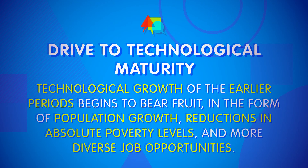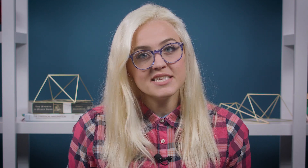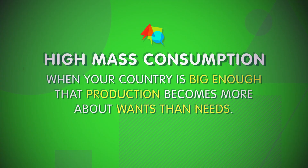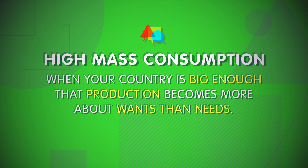Next, nations begin what Rostow called the drive to technological maturity, in which technological growth of the earlier periods begins to bear fruit in the form of population growth, reductions in absolute poverty levels, and more diverse job opportunities. Nations in this phase typically begin to push for social change along with economic change, like implementing basic schooling for everyone and developing more democratic political systems. The last stage is known as high mass consumption, when your country is big enough that production becomes more about wants than needs. Many of these countries put social support systems in place to ensure that all of their citizens have access to basic necessities.